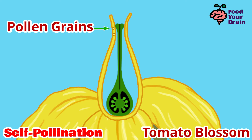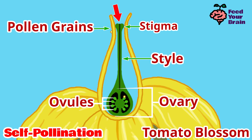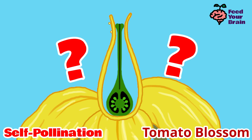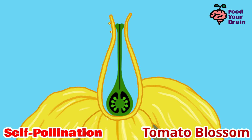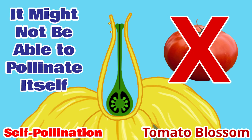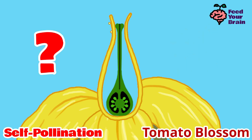The anther cone secretes pollen grains, which sit outside on the anther cone. This self-pollinating tomato blossom is supposed to, on its own, get these pollen grains into the stigma, and hopefully from the stigma the pollen grains will travel down the stile into the ovary, combine with an ovule to turn the ovary into a fruit and the ovules into seeds. But this blossom has no arms or hands — so how will the pollen grains perform all this movement on their own? This is the limitation of self-pollinating blossoms.